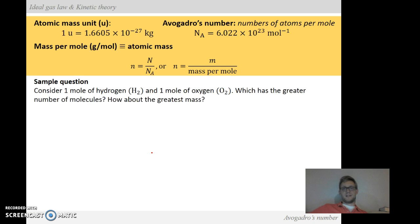So if we look at the sample question, this is one you've probably seen before, but it's slightly different. So if we consider one mole of hydrogen or H2 and one mole of oxygen O2, which has a greater number of molecules and which has the greatest mass. So let's go through and do this. First, we need to calculate the molecular mass of each gas.